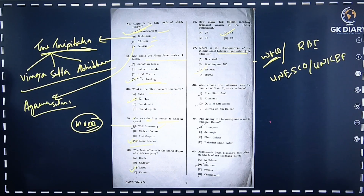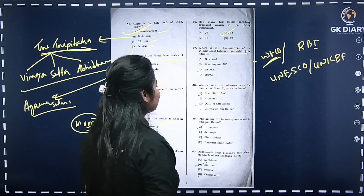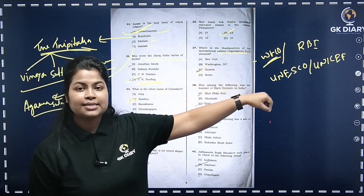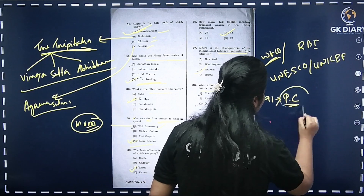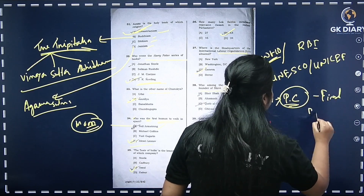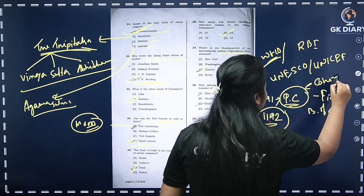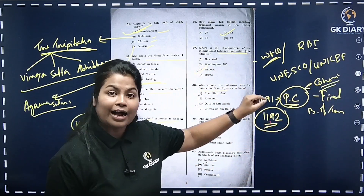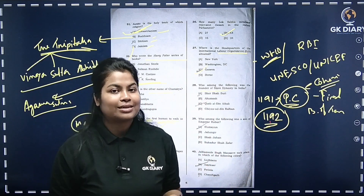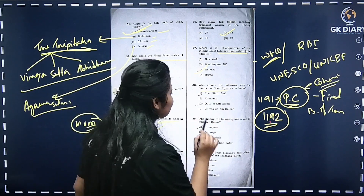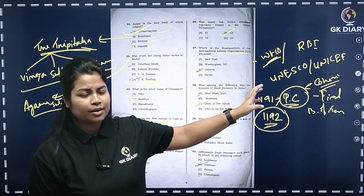Which dynasty in India is called the Slave Dynasty? Muhammad Ghori came to India. The First Battle of Tarain was in 1191 — Muhammad Ghori was defeated by Prithviraj Chauhan. In 1192, the Second Battle of Tarain was fought and Muhammad Ghori won. Qutbuddin Aibak was the founder of the Slave or Mamluk Dynasty. The correct option is C.